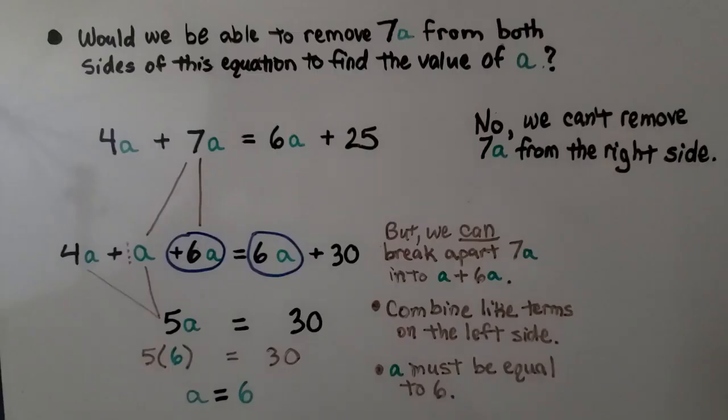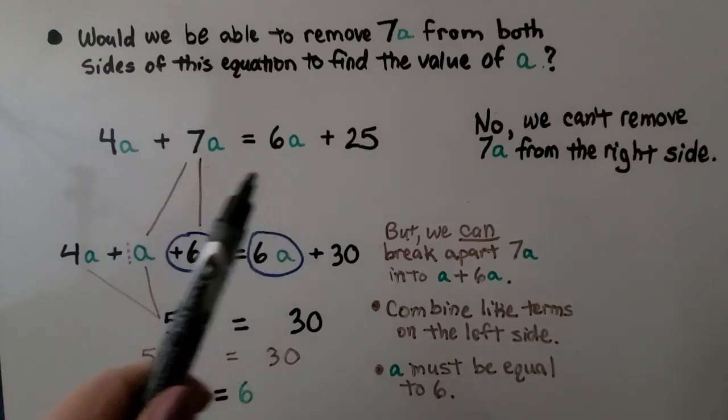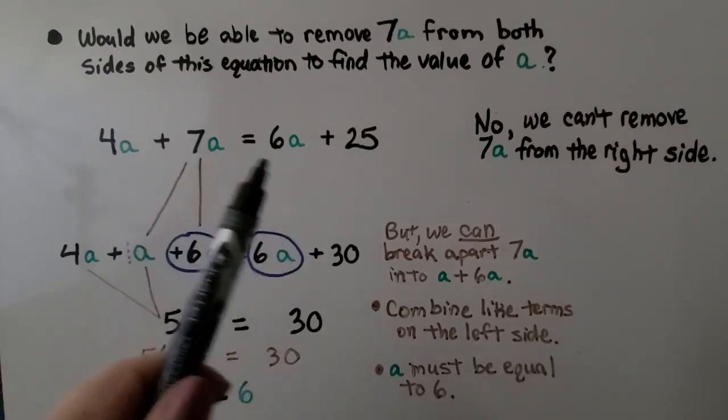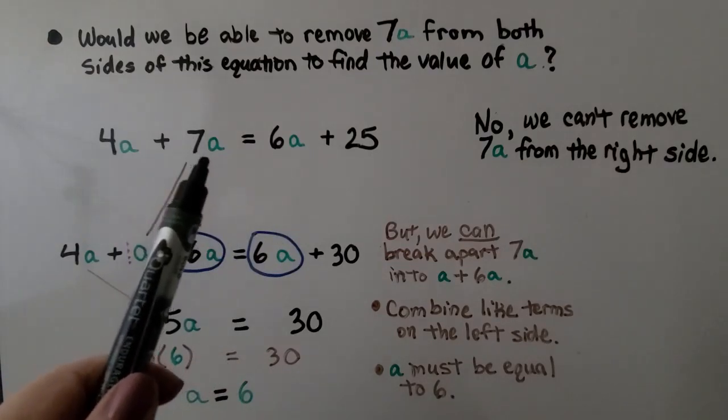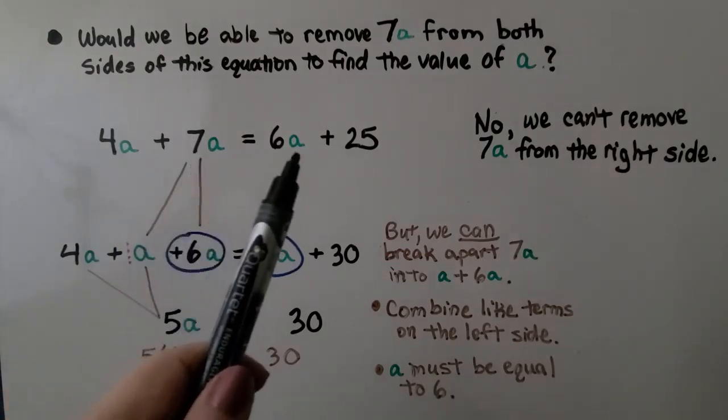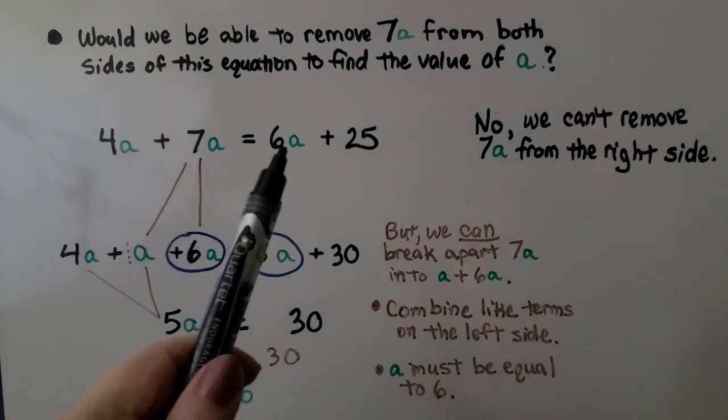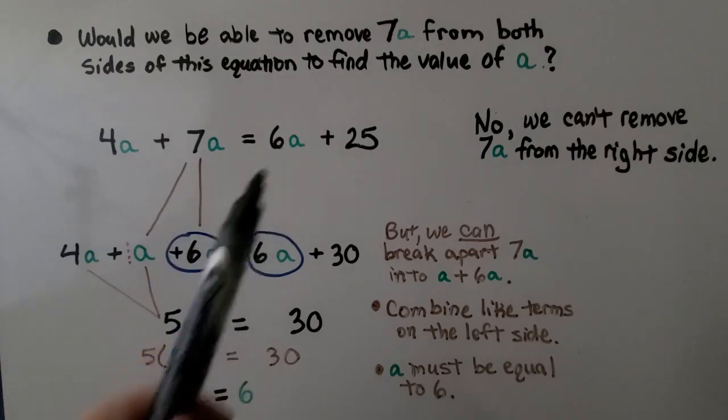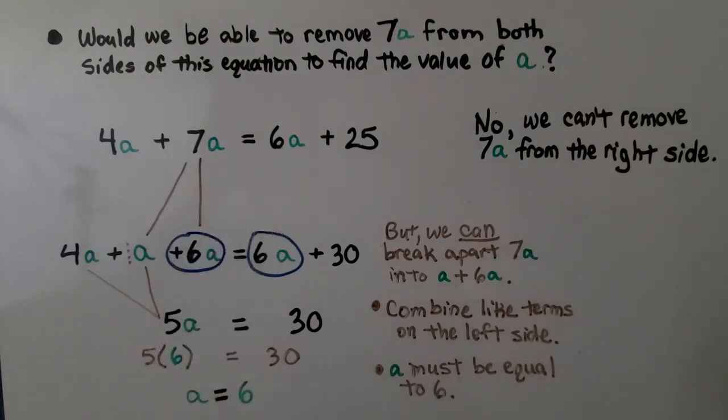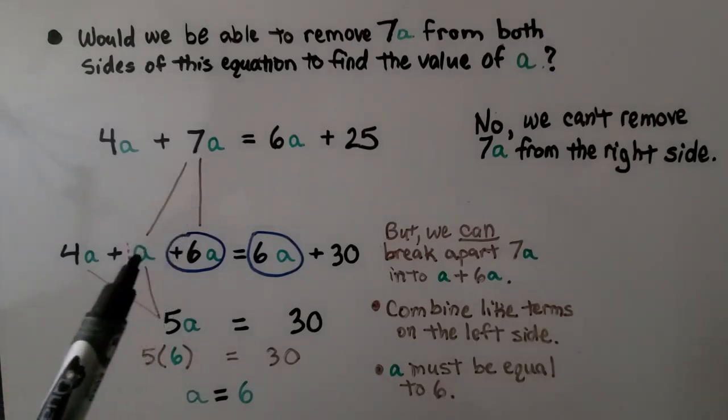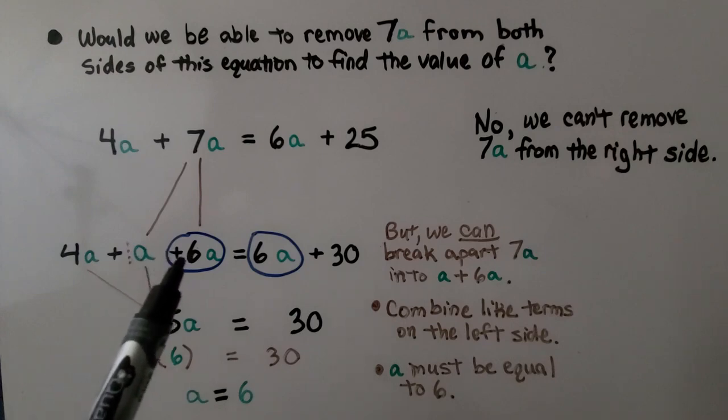Would we be able to remove 7a from both sides of the equation to find the value of a? Hmm, there's no 7a here and 6a is not great enough to take 7 away. So no, we can't remove 7a from the right side. But we can break apart the 7a into an a plus a 6a.